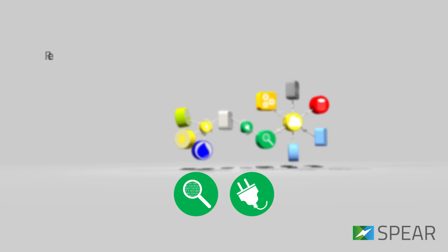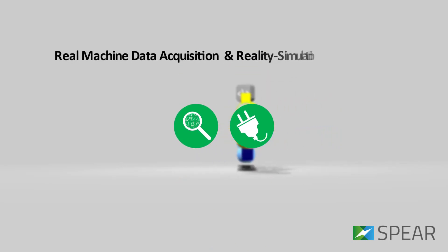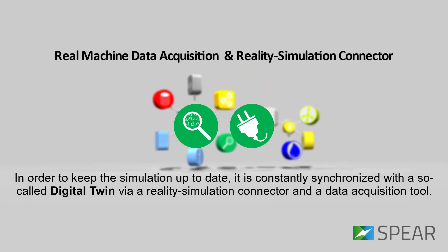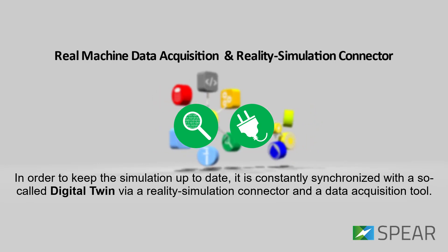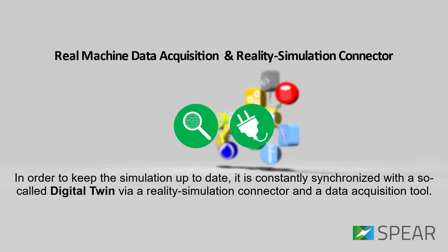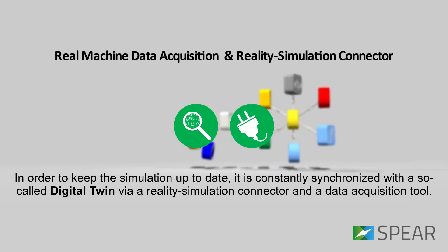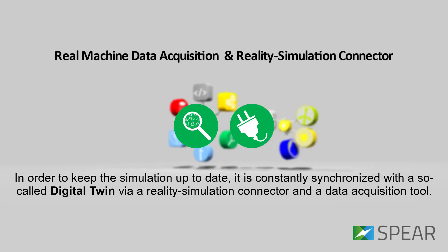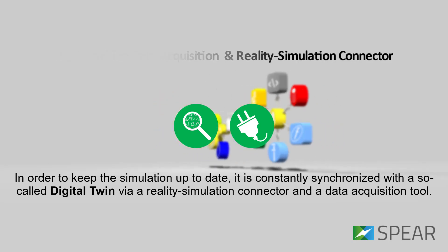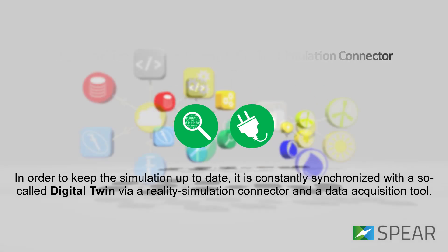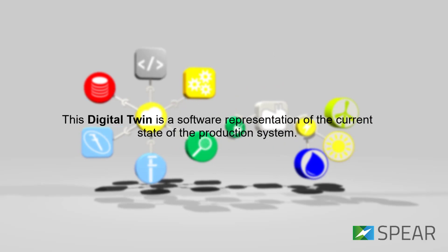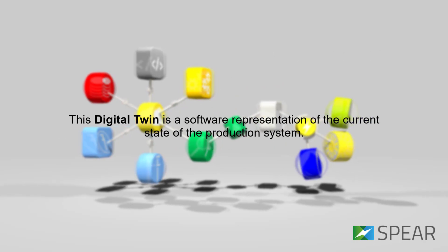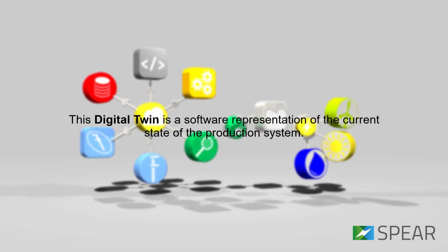The Real Machine Data Acquisition and Reality Simulation Connector: In order to keep the simulation up to date, it's constantly synchronized with the so-called Digital Twin via a Reality Simulation Connector and a Data Acquisition Tool. This Digital Twin is a software representation of the current state of the production system.